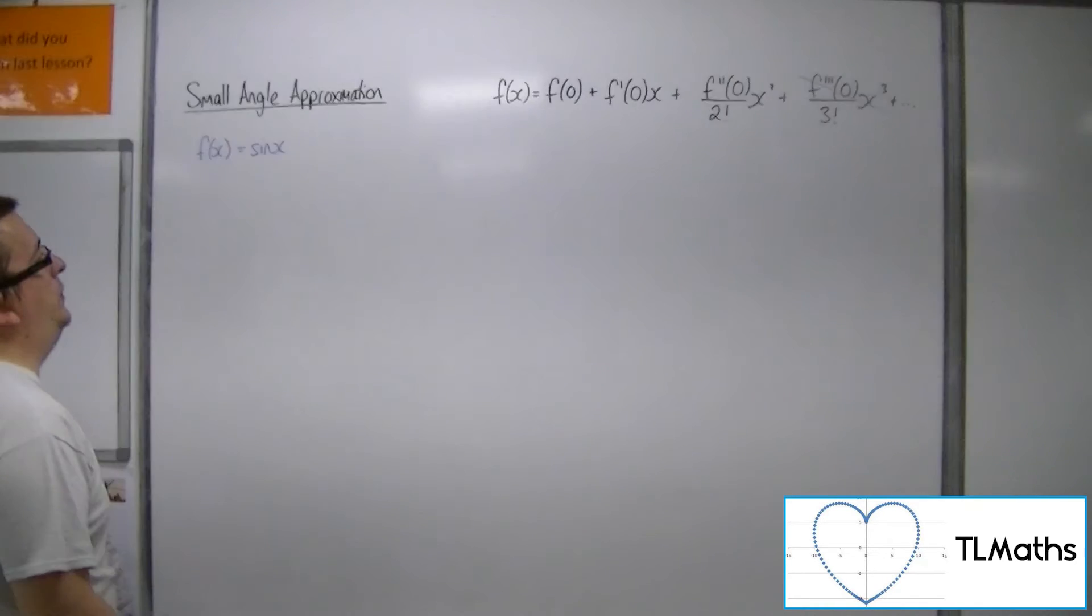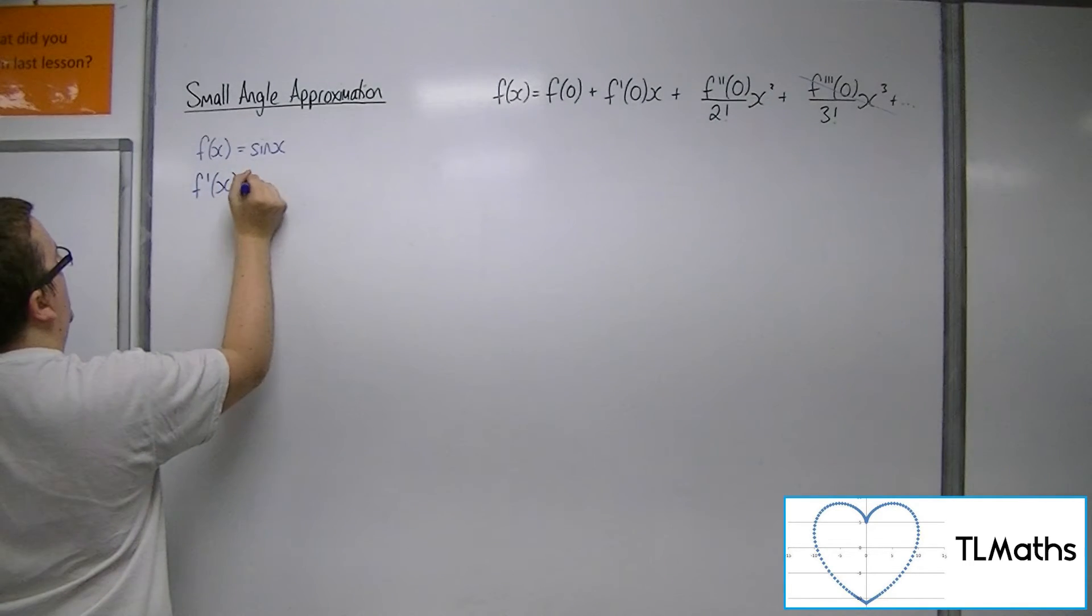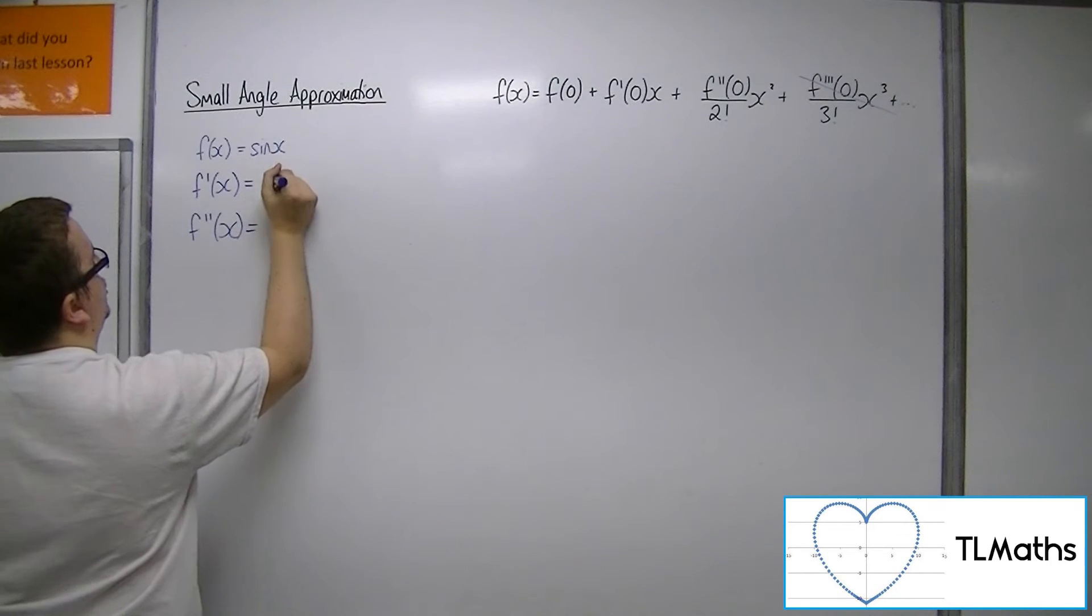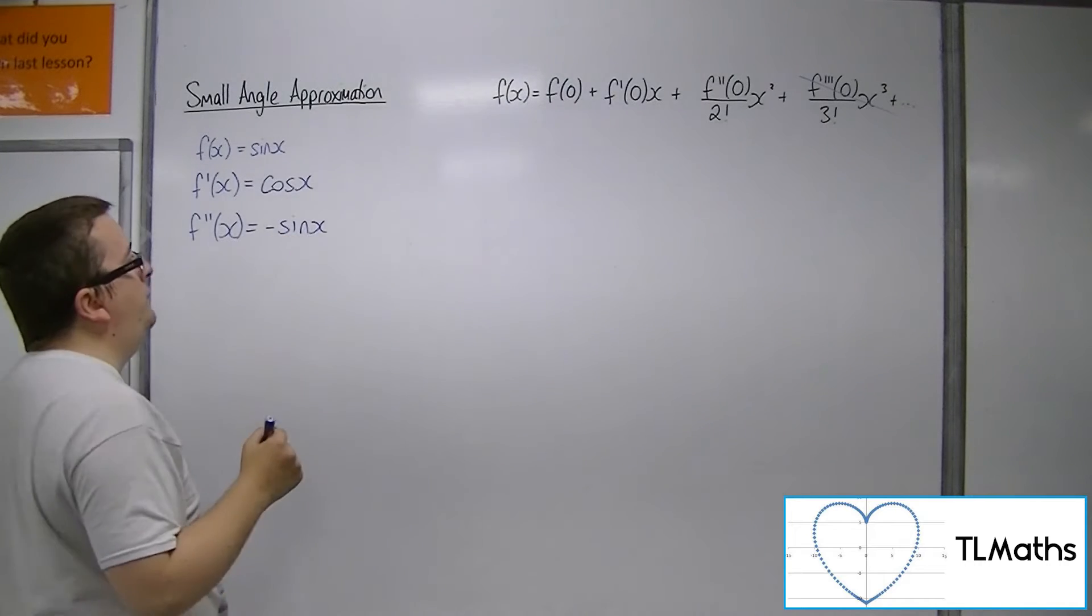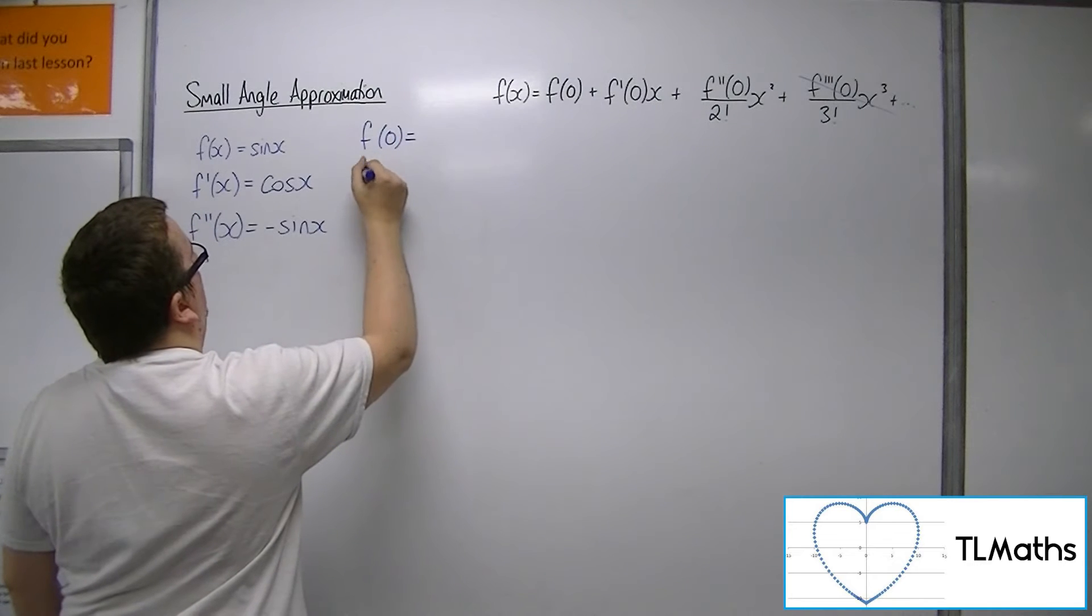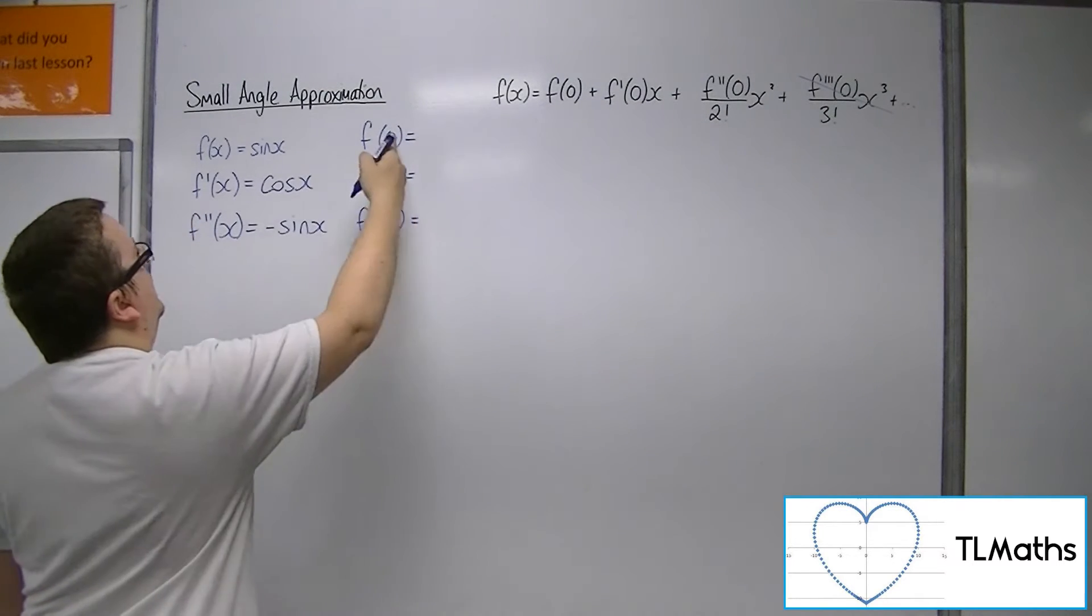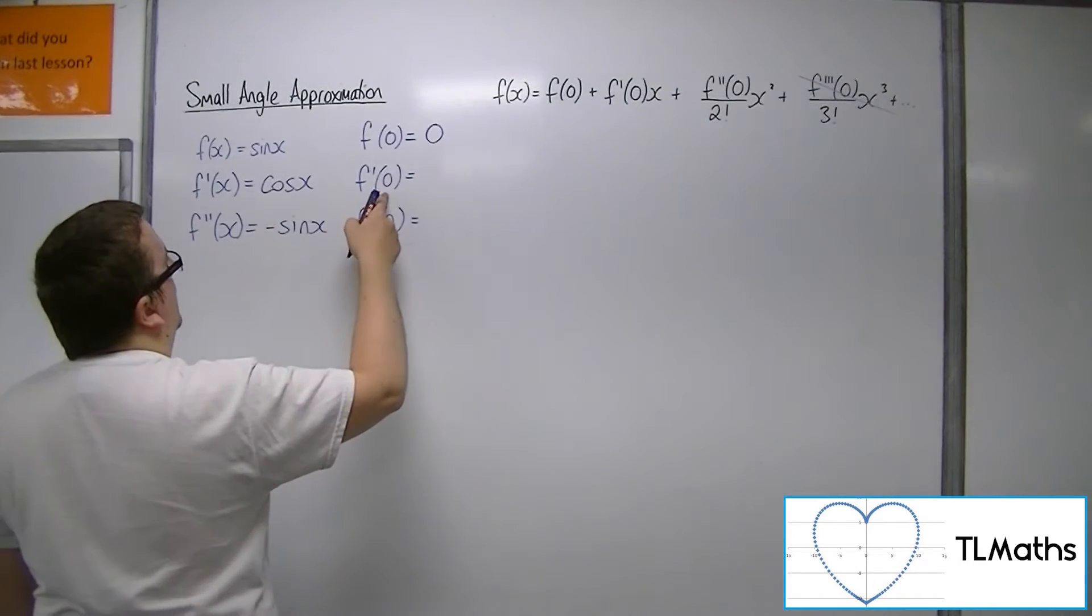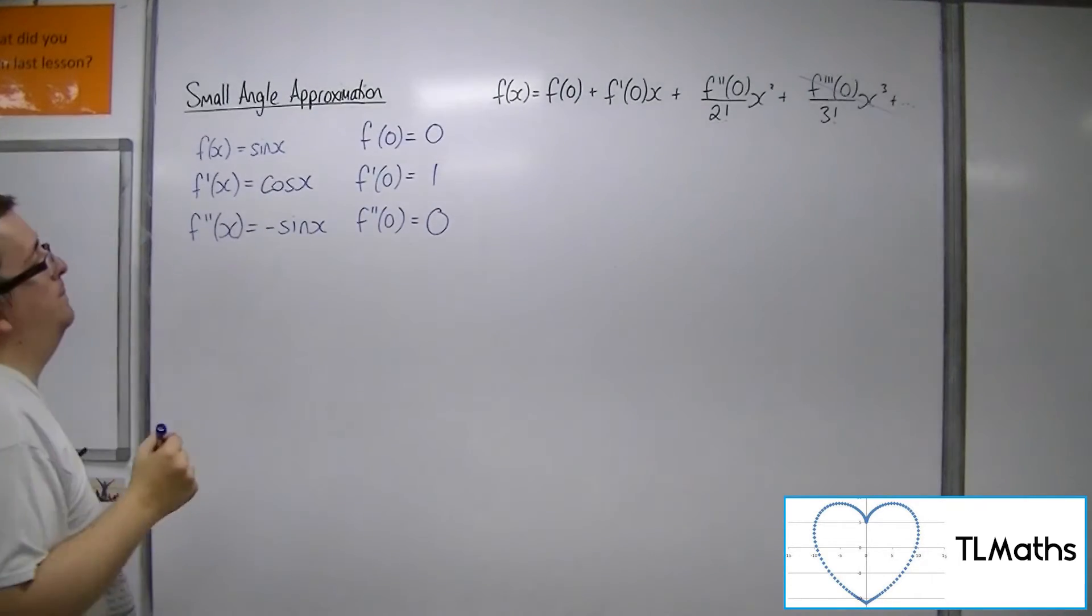So, f of x is sine x to start off with. I'm going to need f prime and f double prime, so the first and second derivatives. Sine x differentiates to cosine and cosine differentiates to minus sine. Now we need f of 0, f prime of 0, and f double prime of 0. Sine of 0 is just 0, cos of 0 is 1, and sine of 0 is 0.